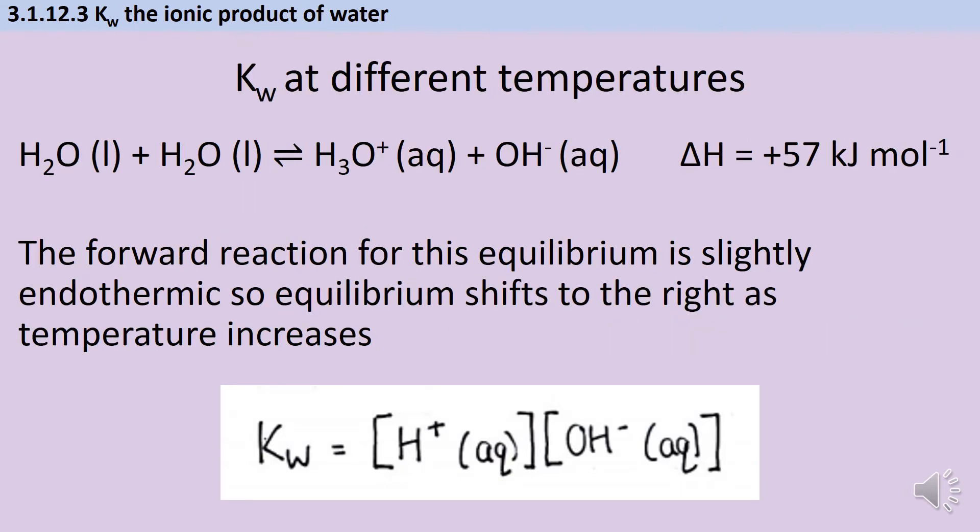If you were to look up a delta H value for this equilibrium, you would see that the forward reaction, the shift to the hydroxonium ion and the hydroxide ion, is slightly endothermic. That means that as the temperature increases, the equilibrium will shift to the right. So as you raise the temperature, you get more hydrogen ions and hydroxide ions and less water.